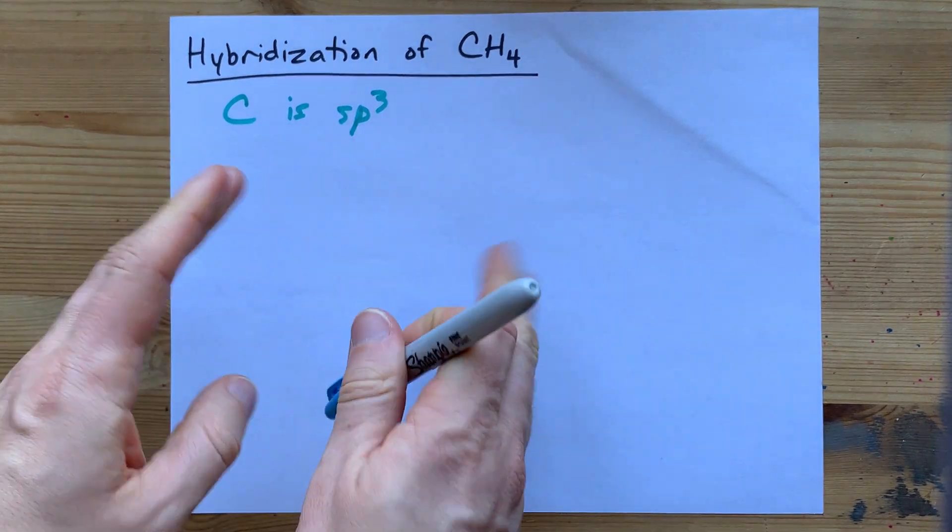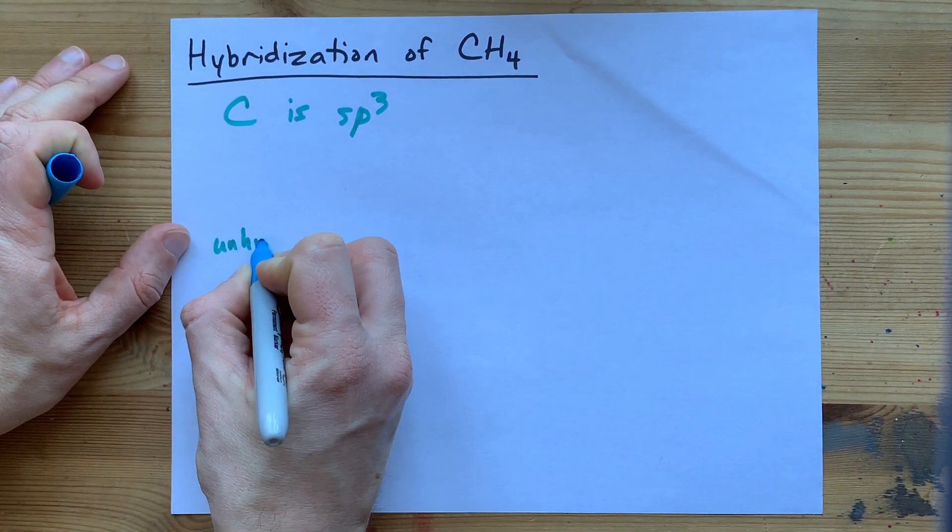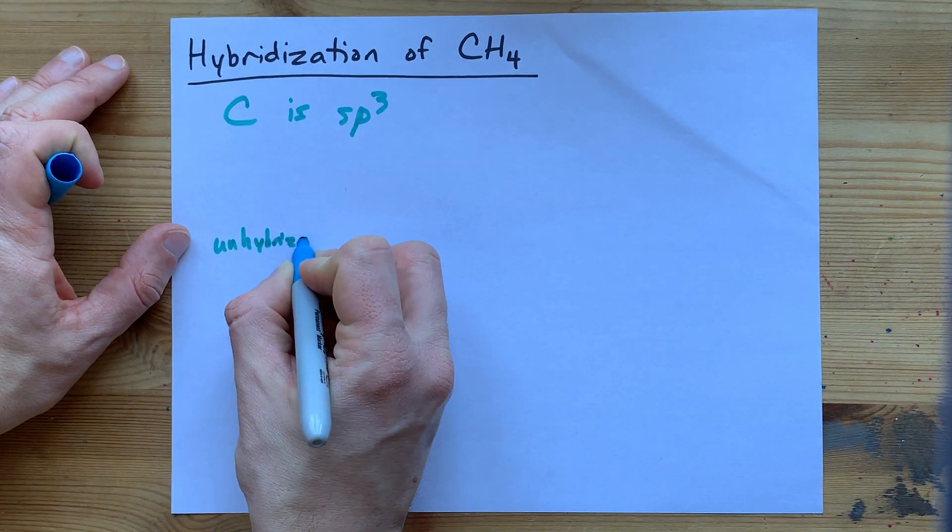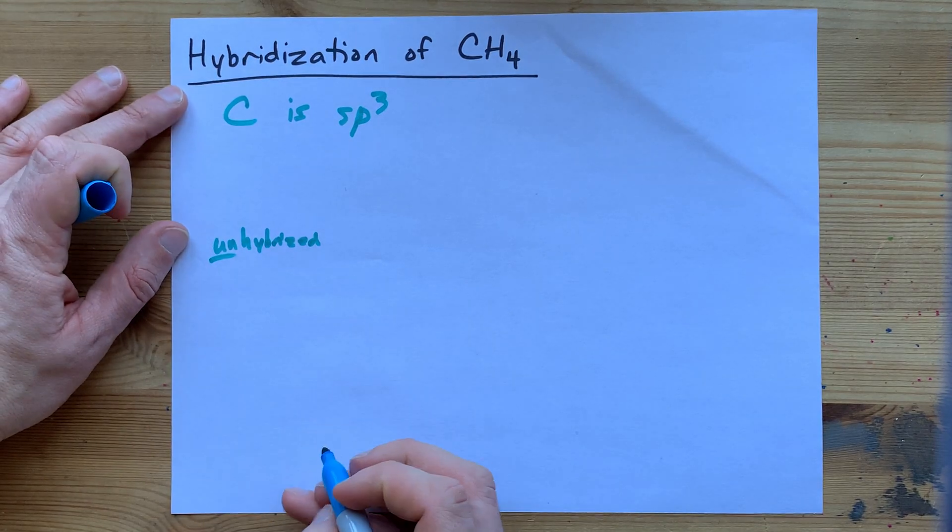But if you want to know why, I'm about to tell you in two minutes. Carbon unhybridized has six electrons total. Well, that's not how you spell hybridized, but whatever. The point is it's unhybridized.